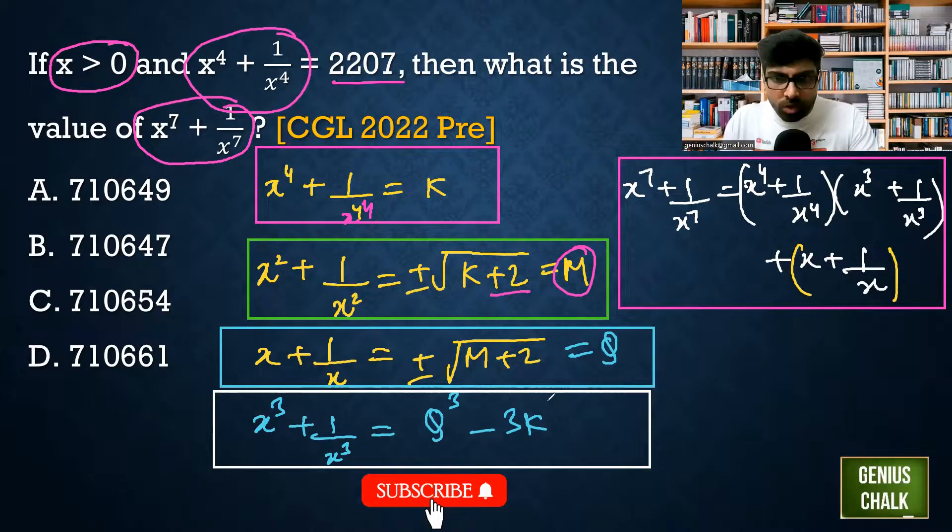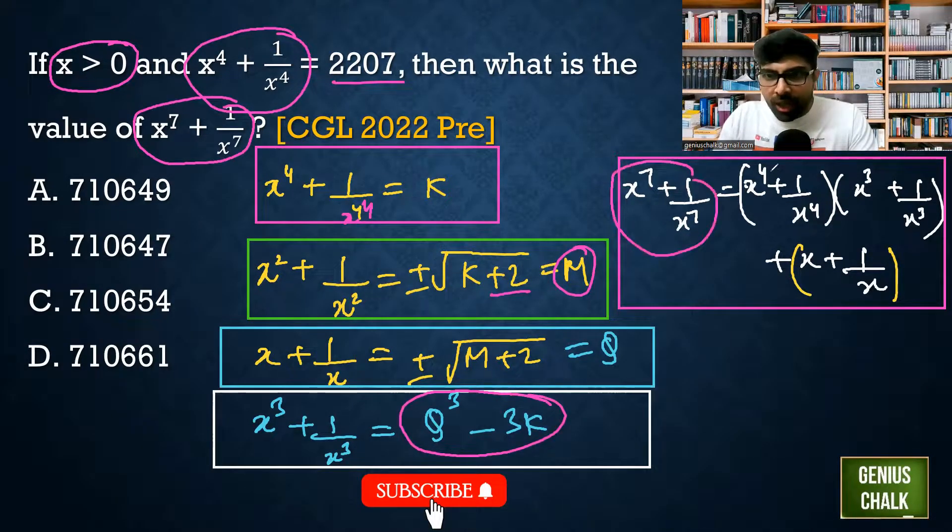Then x cube plus 1 by x cube equals q cube minus 3k. For x^7 we need x^4 and x^3 because 4 plus 3 equals 7, and we can get it if you multiply power 4 into power 3 plus this extra part. Now just use this formula here.